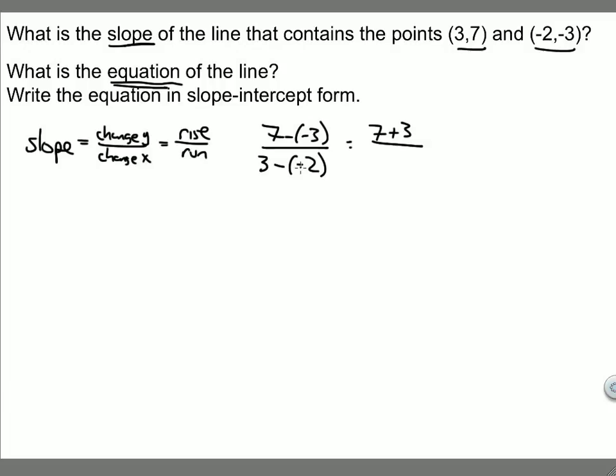And minus negative 2 is the same thing as plus 2, so that's 3 plus 2. The same thing as 10 over 5, which equals 2. So the slope of the equation is 2. That is our first answer.